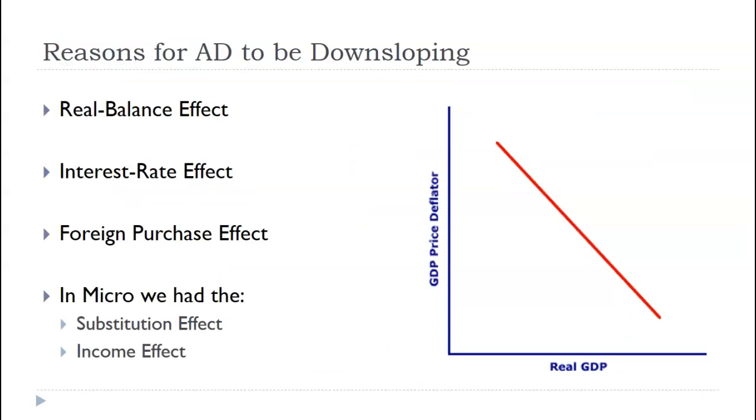So, why is it downward sloping? We had similar things first semester with the substitution to income effect. This semester, for the aggregate demand, which is all the things that are going to be buying things, all the people, households, businesses, etc. Why is it downward sloping? There's three reasons. The real balance effect, the interest rate effect, and the foreign purchase effect. So, all these are based off of the price level changing, and therefore, the real output will change.